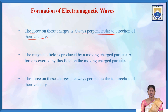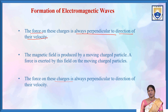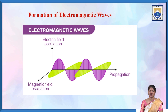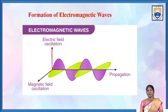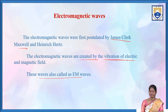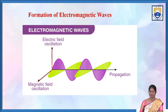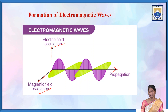The force on these charges is always perpendicular to the direction of their velocity. The magnetic field always acts perpendicular to the direction of their velocities. Here we can see that electromagnetic waves are produced by electric field oscillation and magnetic field oscillation, both perpendicular to each other, resulting in an electromagnetic wave propagating in this direction.